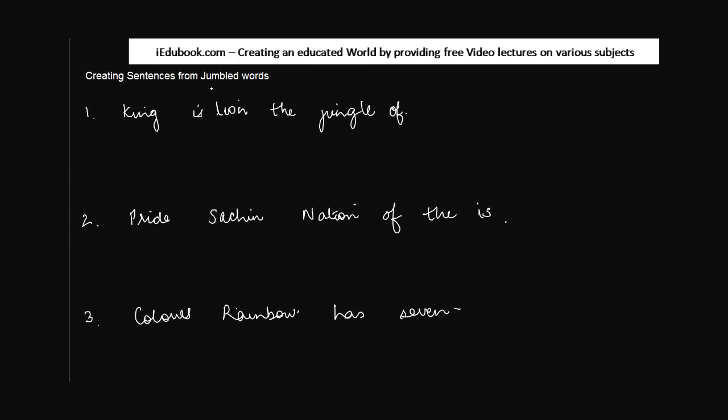Creating sentences from jumbled words. In the previous lecture, which was lecture 1 on sentences, we learned that a sentence is a group of words which makes complete sense. Now we will see some words or collections of words which are jumbled up.